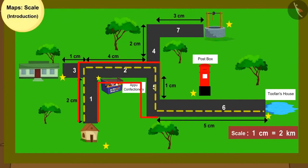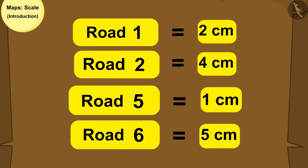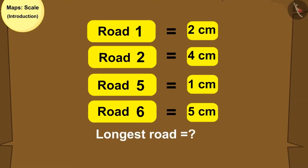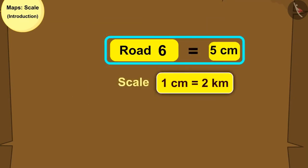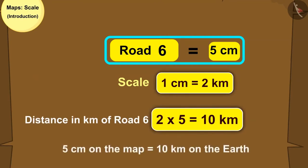Here the distances of all the roads on Golu's way are shown in centimeters. Can you identify the longest road? Use the scale to tell its distance in km. You can pause the video and find the answer. Road number 6 is the longest road and its distance is 10 km.